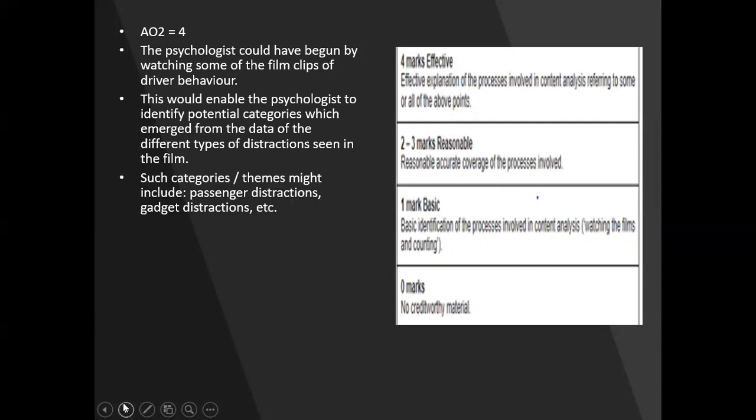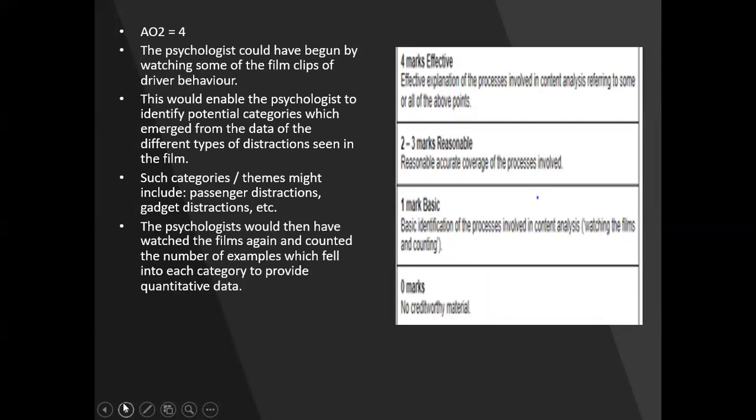Right? So that's what's allowing them to do. Such categories, themes might include passenger distractions, gadget distractions, etc. So you could have included that. They could have been looking at themselves in a mirror. Right? Turn it into something real. The psychologist would have then watched the film again and counted the number of examples which fell into each category to provide quantitative data. Because remember, you're explaining what they are doing. You're not telling us what content analysis is. You're explaining the process the psychologist would have to carry out.